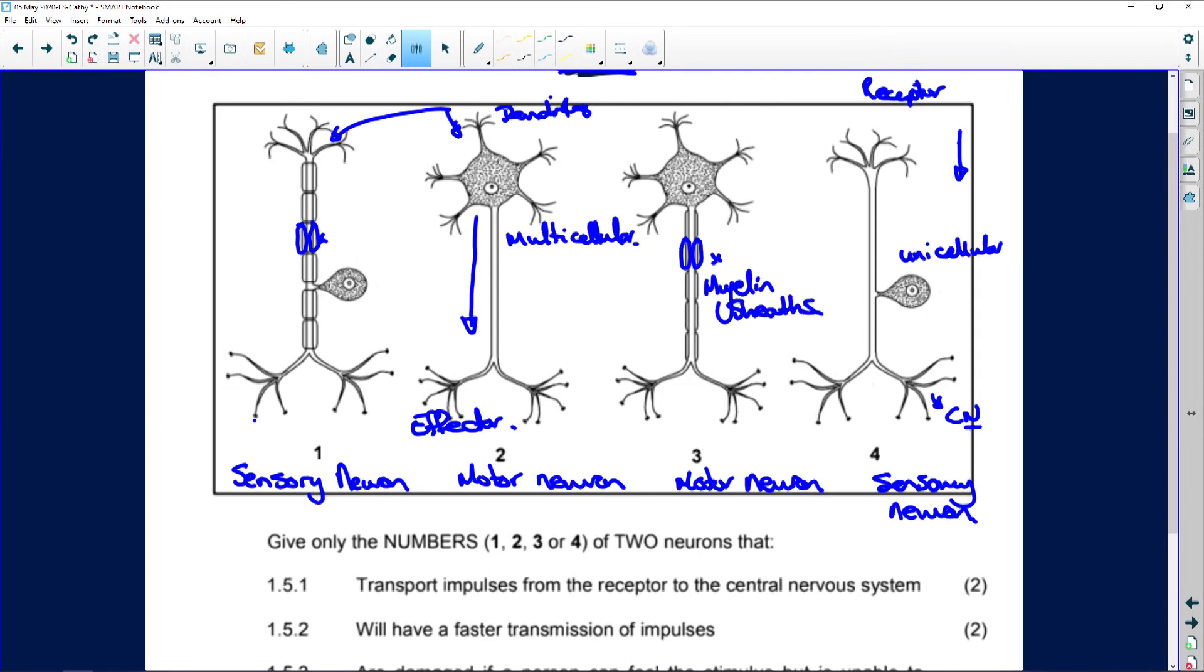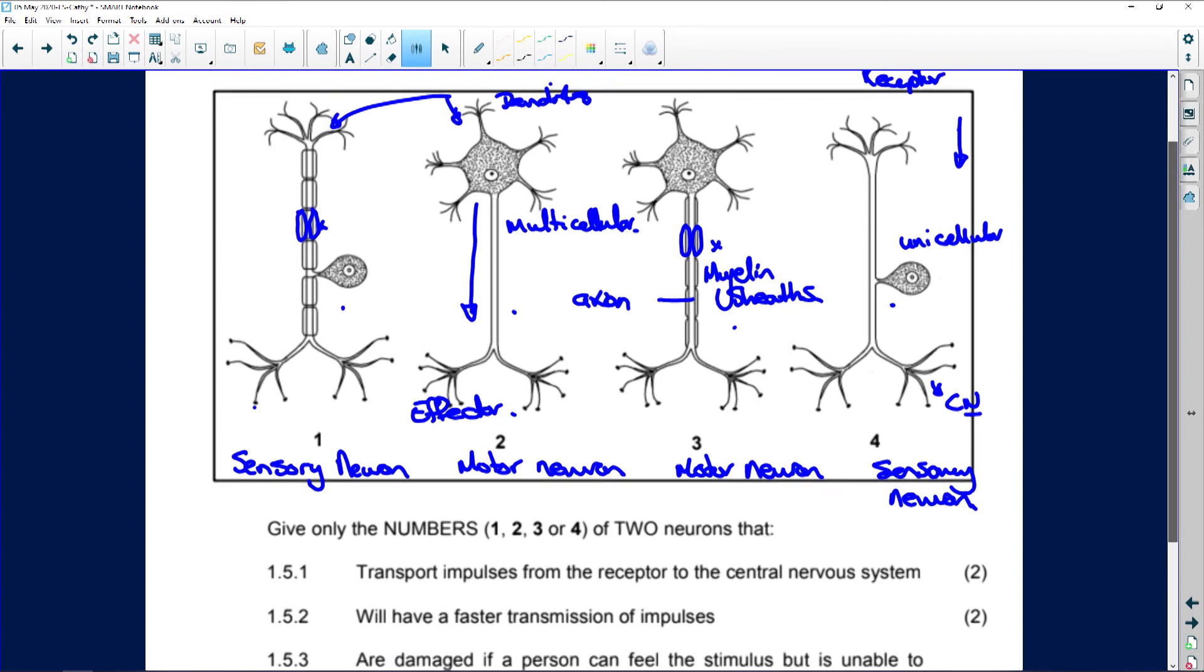Okay, so this sensory neuron and this motor neuron have myelin sheaths around the axon. Okay, and the same here. This unicellular, at least sensory neuron, and this motor neuron have no myelin sheath. So, clearly the questions are going to have something to do with that.